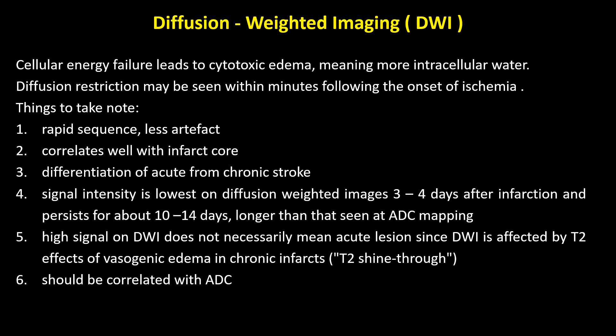There are a few salient features of the DWI sequence. Number one, it is a rapid sequence with fewer artifacts. Number two, it correlates well with the infarct core and can differentiate acute from chronic ischemic stroke. Signal intensity is lowest on diffusion-weighted images 3 to 4 days after infarction and persists for about 10 to 14 days longer than that seen on ADC mapping. A high signal on DWI does not necessarily mean an acute lesion, since DWI is affected by T2 effects of vasogenic edema in chronic infarcts — these are called T2 shine-through. Lastly, DWI should always be correlated with ADC.